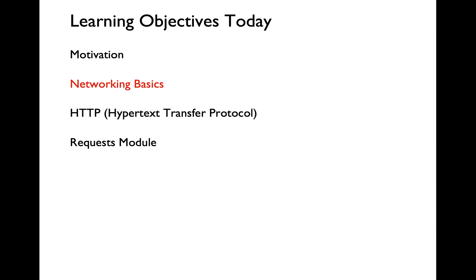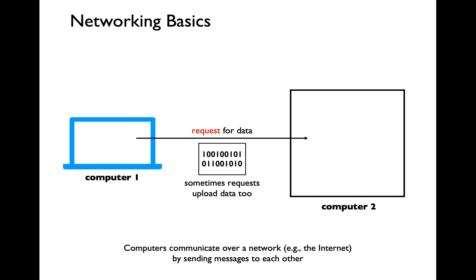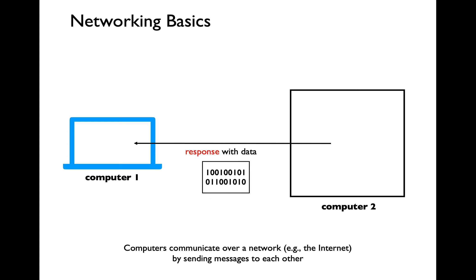Let's learn about the basics of computer networks. You connect one computer to another to form a basic computer network. From your computer you send a request to a remote computer to get some data. Your requests need not always ask for data — you can also upload data from your own laptop. For example, recording this lecture and uploading it to YouTube means sending a request to upload data. All of the request information sent from one computer to another will be in the form of binary representation. Once the remote computer receives a request, it sends back a response which includes the data you wanted, also in binary representation.